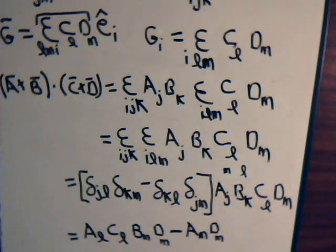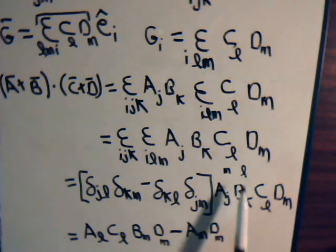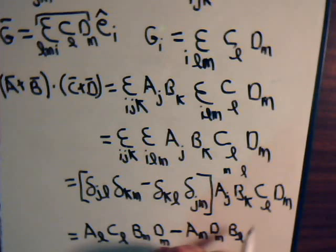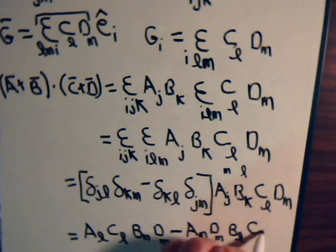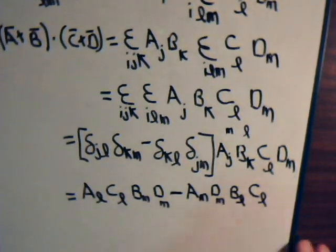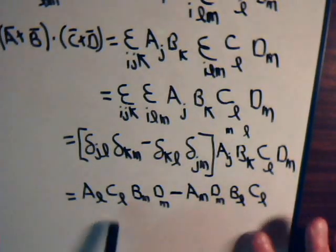When K becomes L that equals one, when J becomes M that equals one, so we have minus A_M times D_M, and then we will have B_L C_L. So that is the effect then that this expression has on these scalars—it changes the indexes so that we now have this expression.